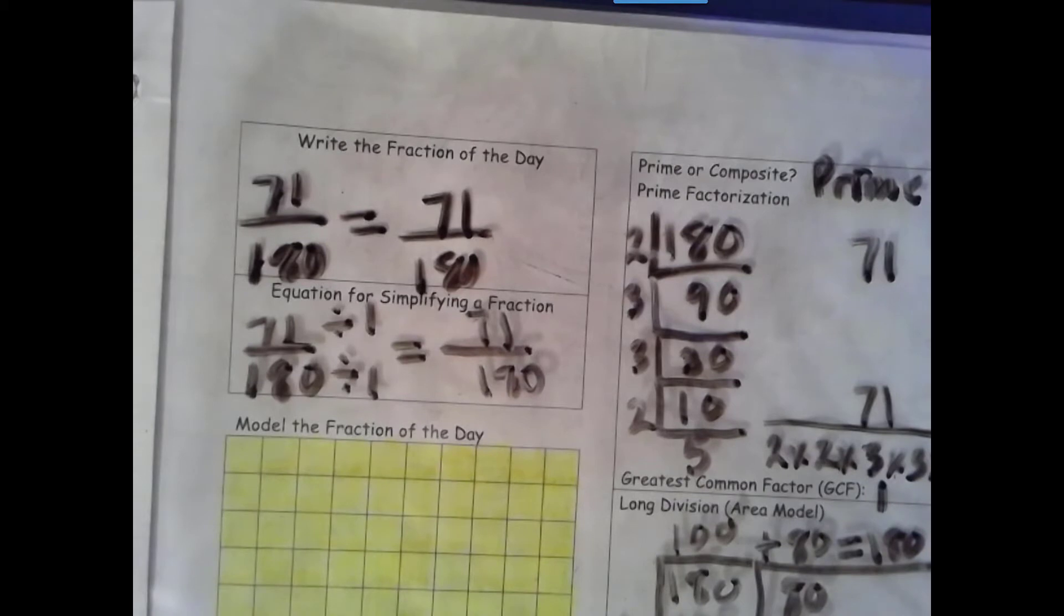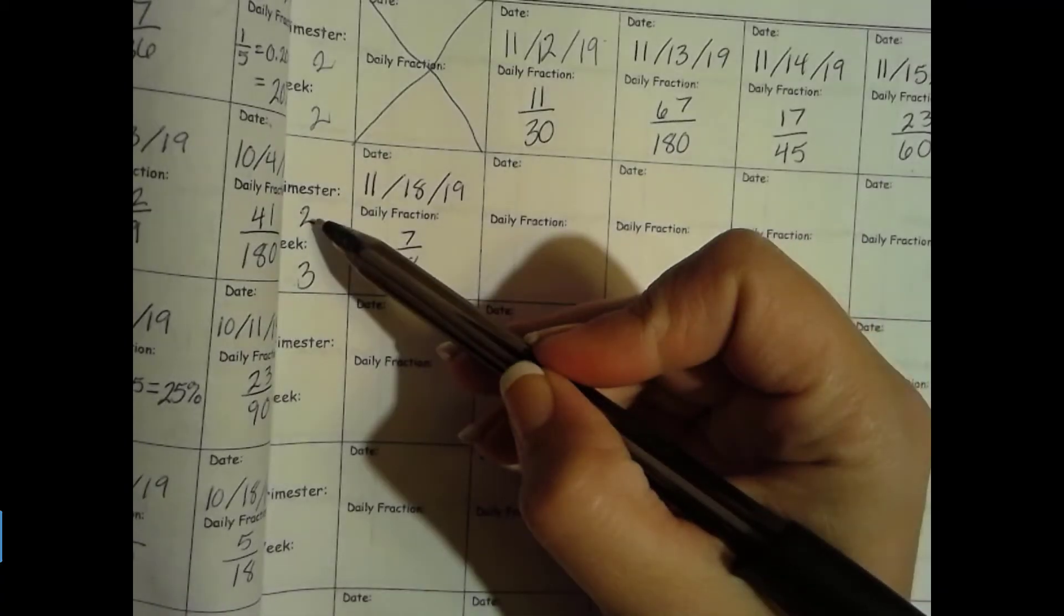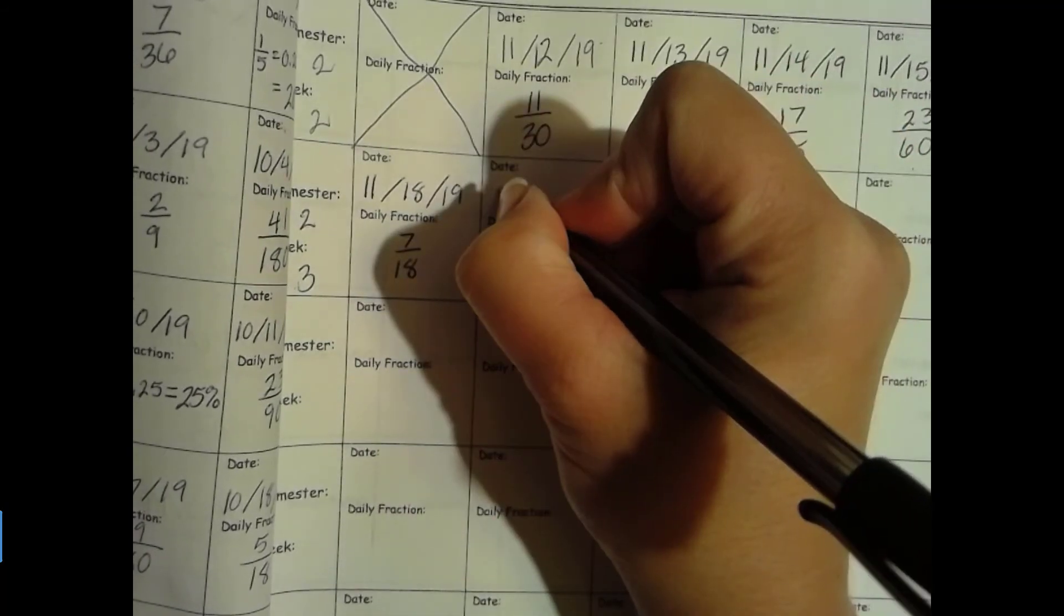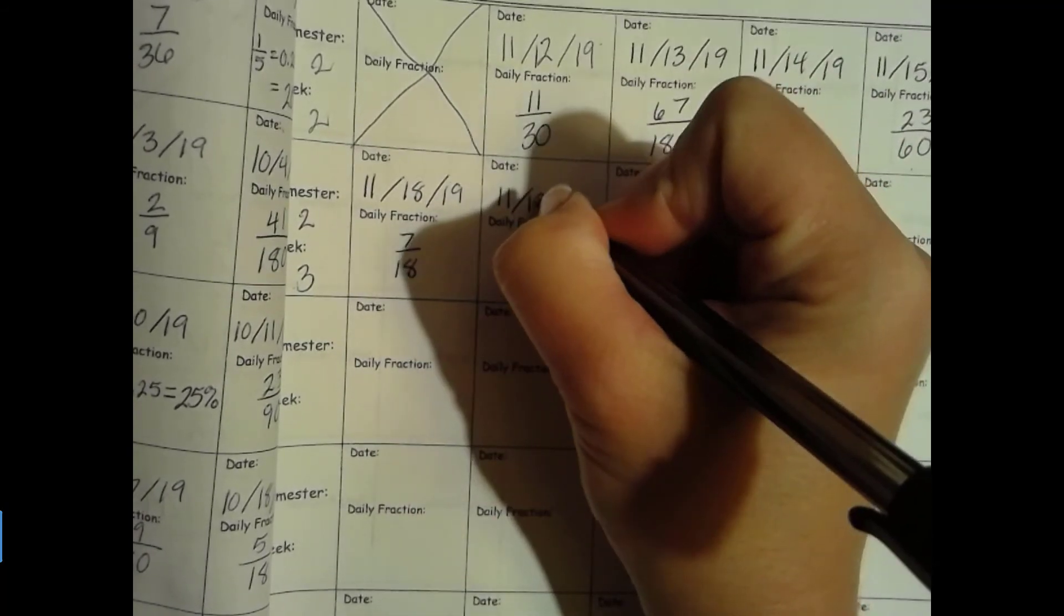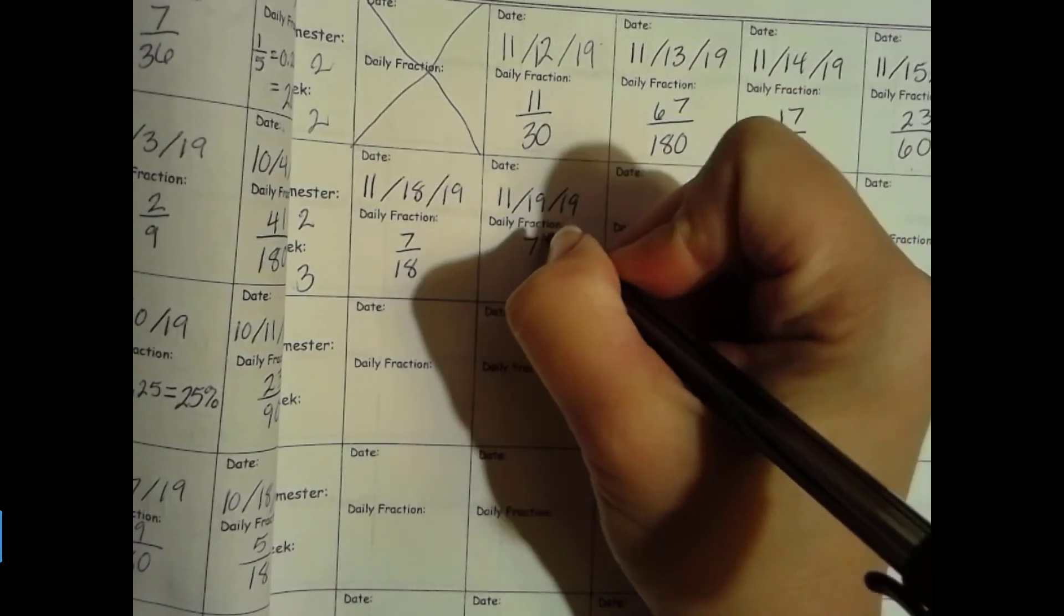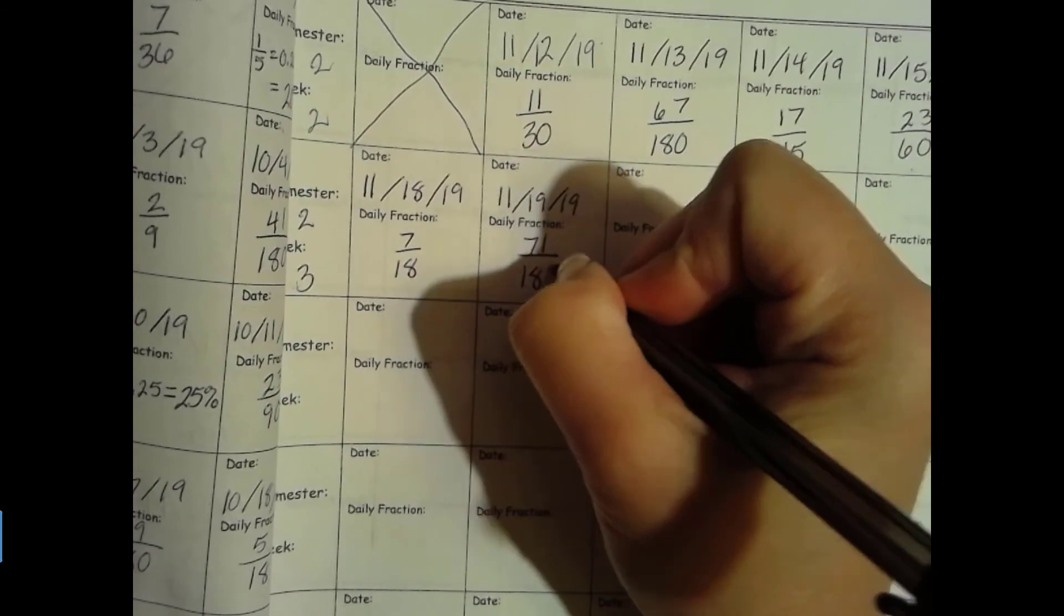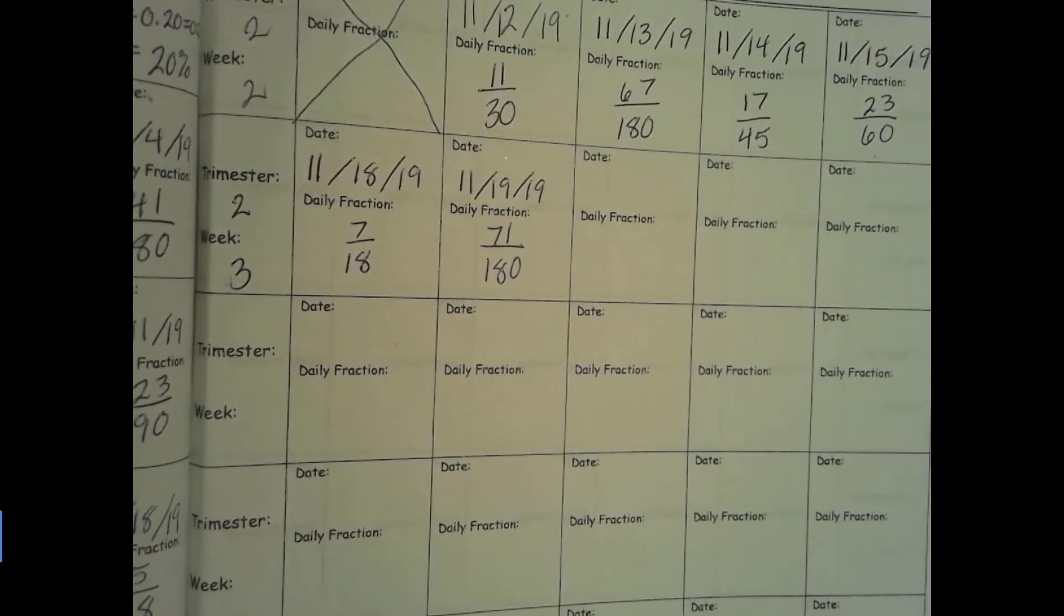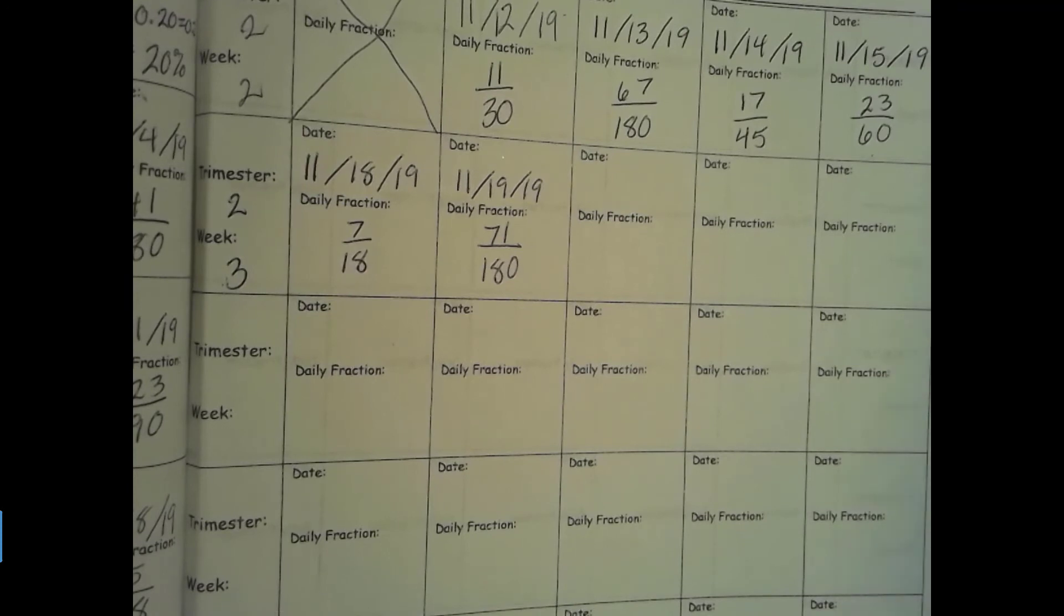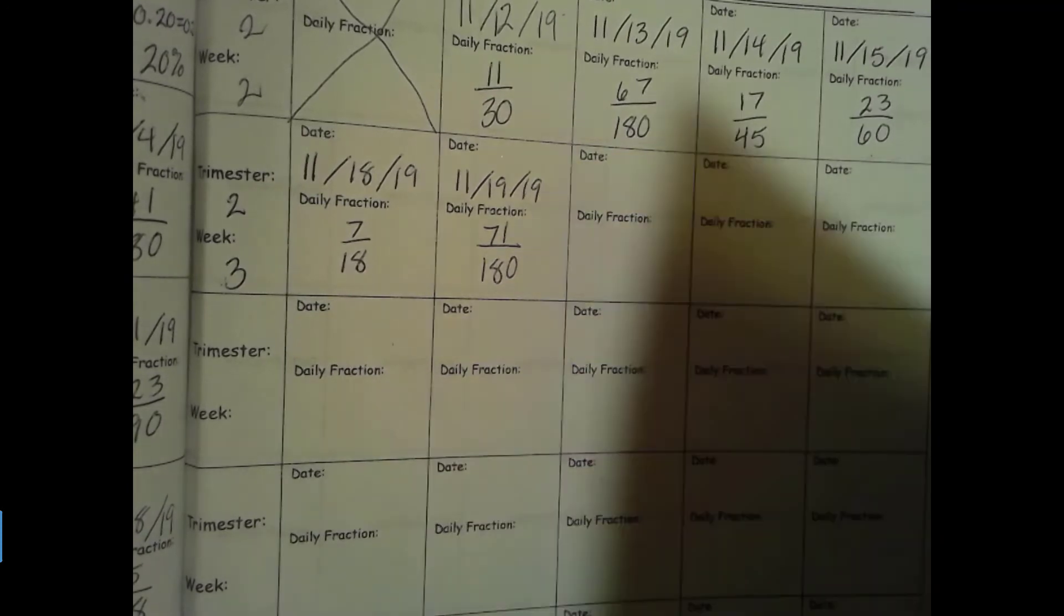All right, let's go ahead and fill in our data collection page. Trimester 2, week 3. Today is 11/19/19, and our fraction for today is 71/180. 71 is a prime number. It is not a factor of 180, so our greatest common factor is 1.